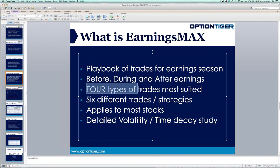There are four categories of trades most suited for certain stocks, and six different trading strategies total. We know volatility gets bumped up before the earnings event — so how can we take advantage of the volatility bump that happens in the two or three weeks prior? And after the earnings event, that same volatility gets crushed the next day — how can we take advantage of the volatility crush trades? What kind of stocks will each trade work on?